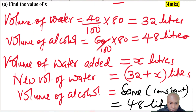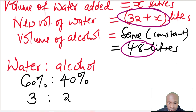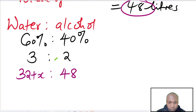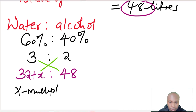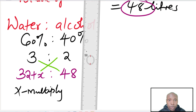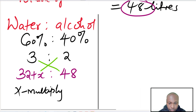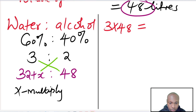Using the new ratio, we match water to alcohol: 3 is to 2 equals (32 plus x) is to 48. We can now cross multiply to find the value of x.